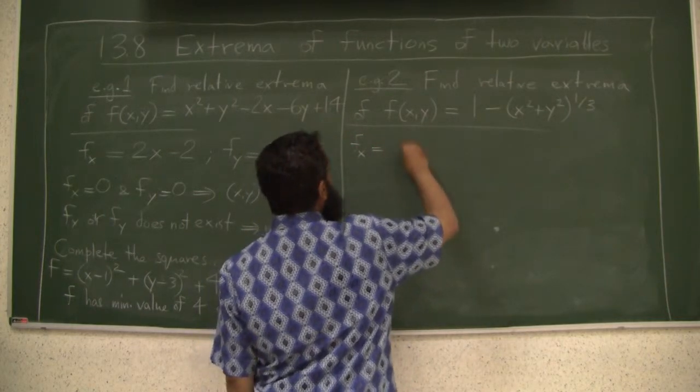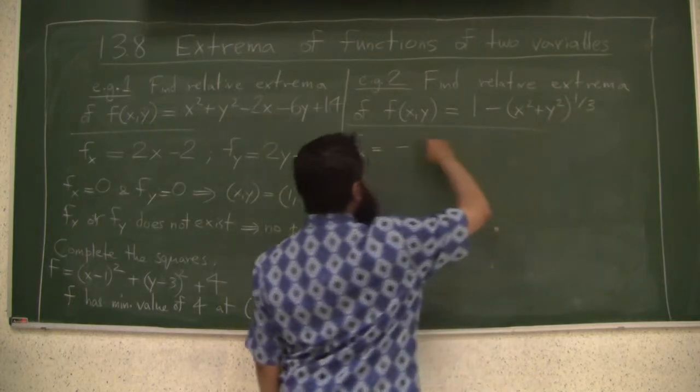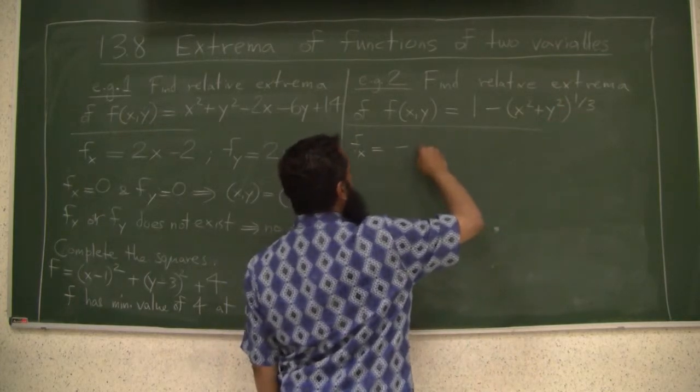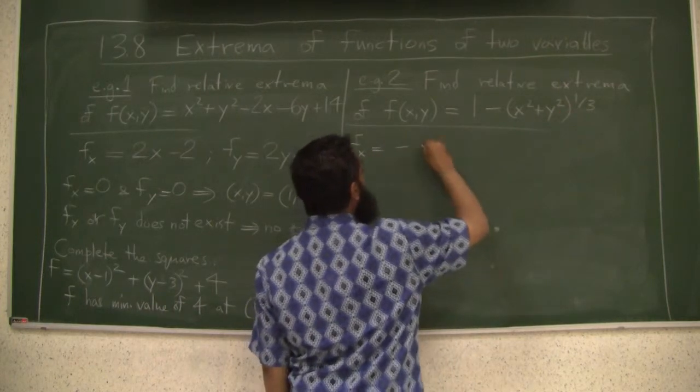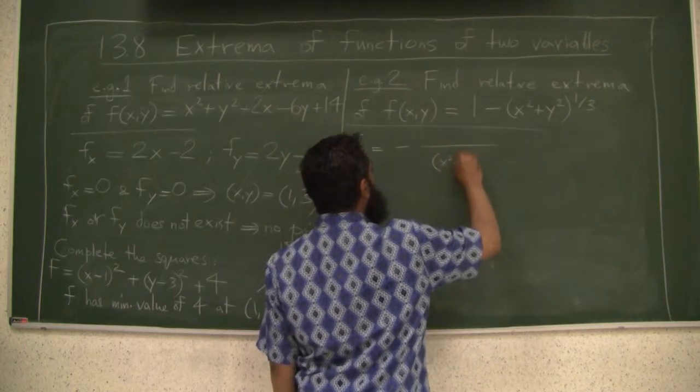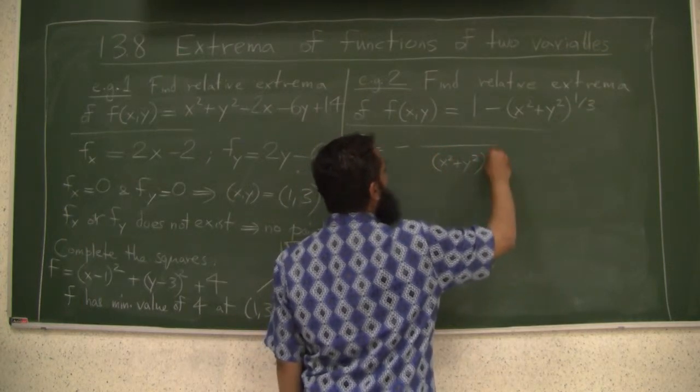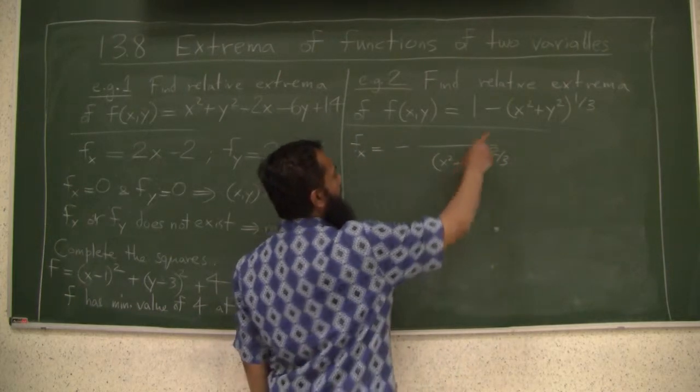f of x equals negative... one third will come down and two thirds of the power, negative two thirds, so it will be x cubed plus y squared to the negative two thirds. Derivative inside is 2x, and there is a three, one third, right?